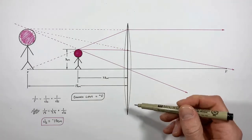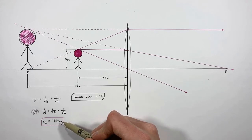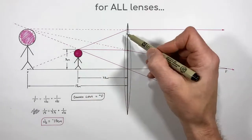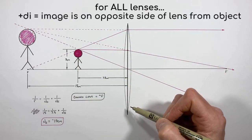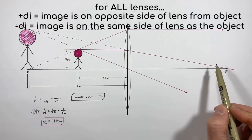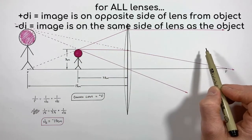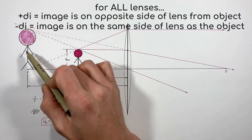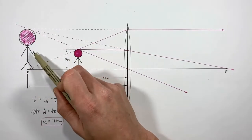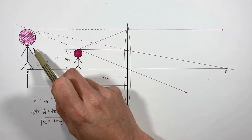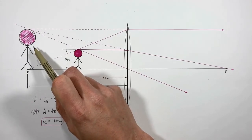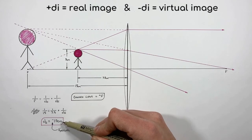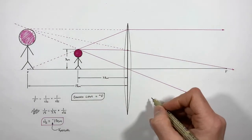Let's talk about what this negative 15 centimeters means. When dealing with a mirror, a negative image distance implies the image is on the opposite side of the mirror from the object. But with a lens it's the opposite — you expect light to pass through the lens and form an image on the far side. A negative image distance means the image is actually behind the lens, and because this image can't be projected onto a surface, we say it is a virtual image.